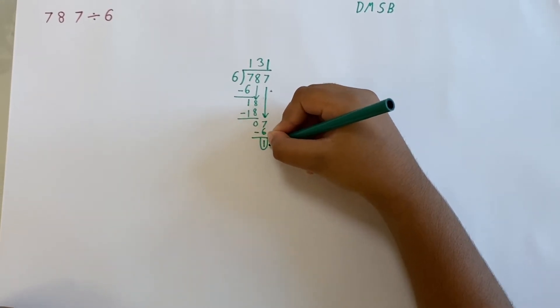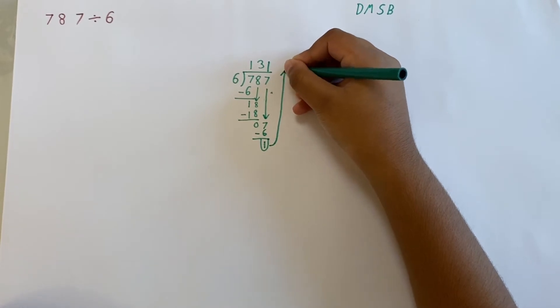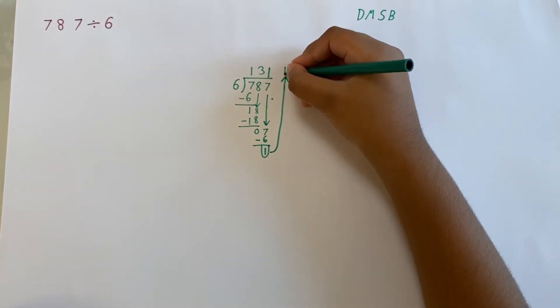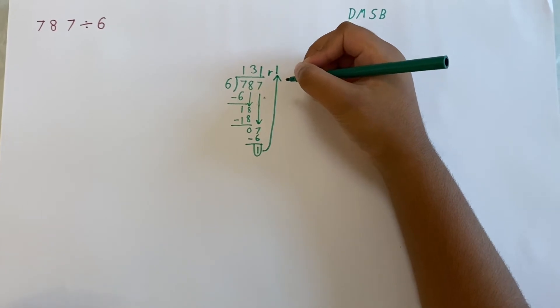Here, 1 is our remainder. We would bring 1 up and write 1 here and put an R to represent the remainder.